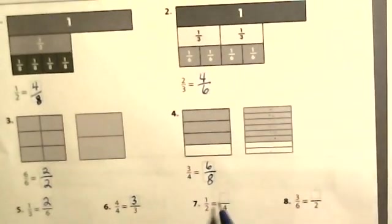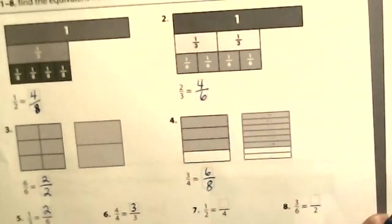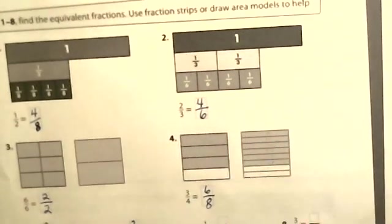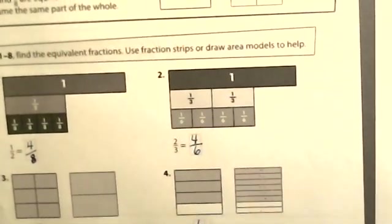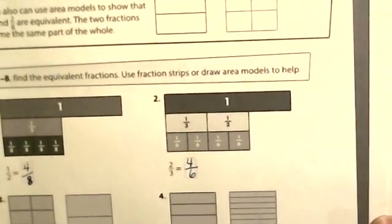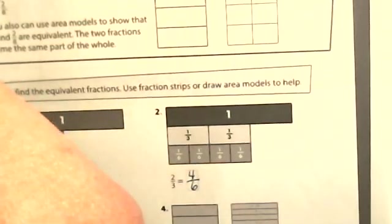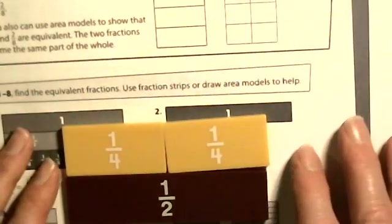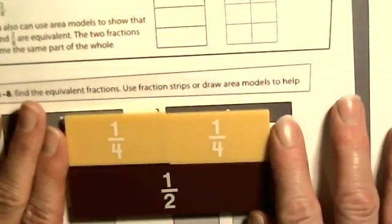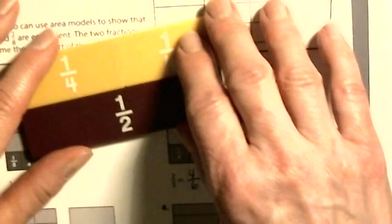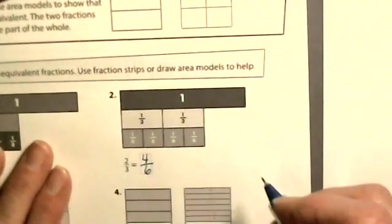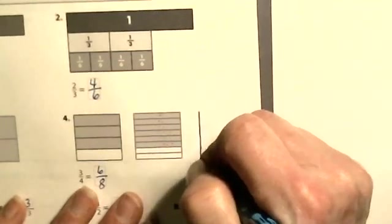This one is half and fourths. Did we have halves and fourths somewhere? I don't see it on this page, so I'll work it out. One-half is equal to two-fourths. I could also make an area model to show this — one-half equals two-fourths.